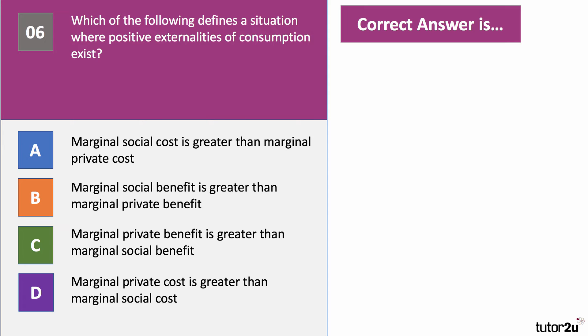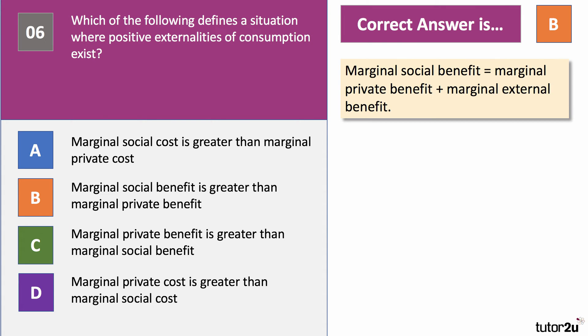Question six. Which of the following defines a situation where positive externalities of consumption exist? If you've revised merit goods, can you visualise the diagram? The answer is B. Marginal social benefit is the marginal private benefit plus the external benefit, and positive externalities of consumption generates external benefits. It might be worth drawing the diagram to show positive externalities of consumption and checking your revision notes.